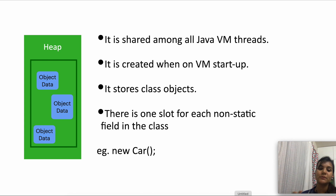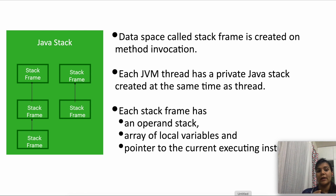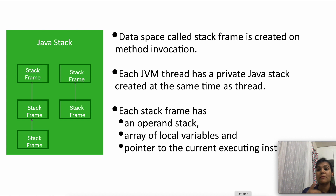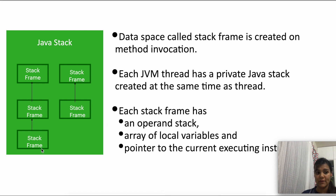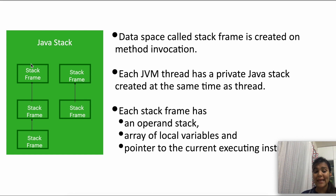Next is the Java stack. When a method invocation starts, a data space called a stack frame is created. Every time a JVM thread is created, a Java stack is created at the same time — each thread will have its own Java stack, so one thread would not know what is happening in another thread. This way method execution is very thread-safe. The stack frame contains an operand stack, an array of local variables, and a pointer to the currently executing instruction.